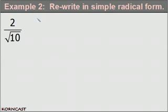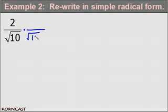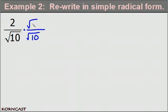In example 2, I'm going to rationalize the denominator to rewrite this expression in simple radical form. Just like in example 1, I need to multiply the denominator by something that's going to get rid of this radical. I know the square root of 10 times the square root of 10 will give me the square root of 100, which is 10, so that will get rid of my radical in the denominator. And again, I need to multiply by 1 because I just want to change the way it looks but not its value. So I know that the square root of 10 divided by the square root of 10 will give me 1.